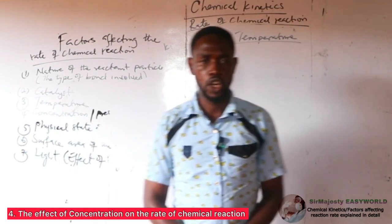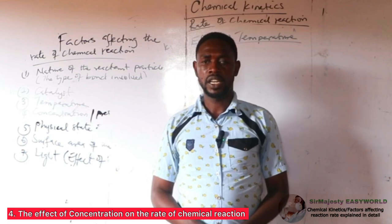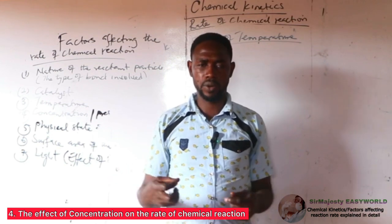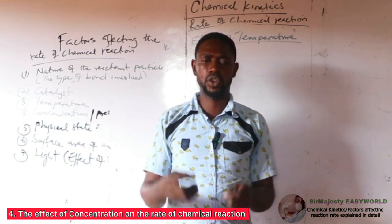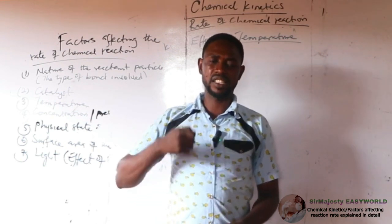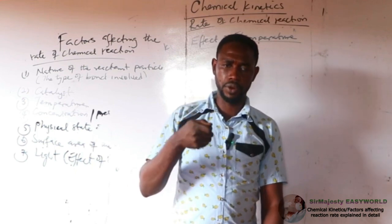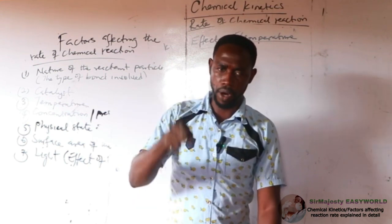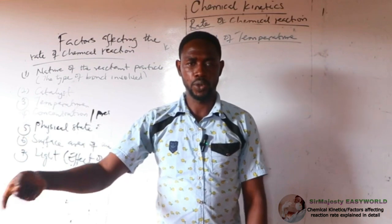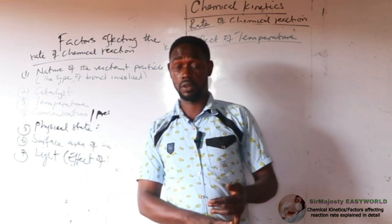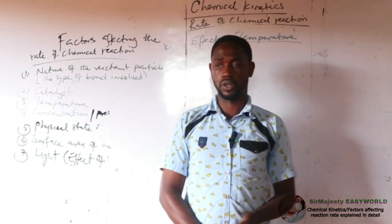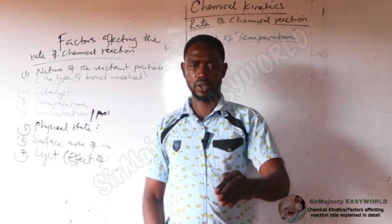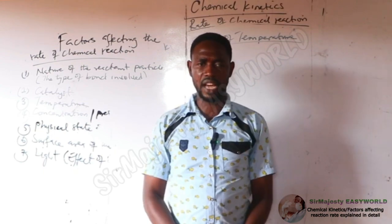The next factor is concentration. Concentration increases the number of particles colliding, making the particles overcrowded. Crowded particles in a small space lead to more collisions. Increase in concentration increases the rate of chemical reaction because it increases the number of effective collisions, leading to more destruction of bonds and more formation of new bonds. According to the law of mass action, the rate of reaction is directly proportional to the active masses of the reactants.